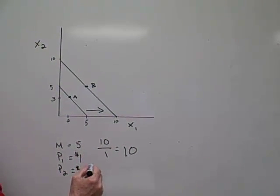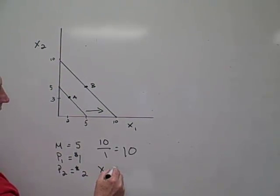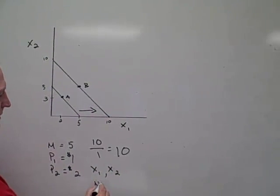Since they both went up, both of these goods, X1 and X2, are normal goods.